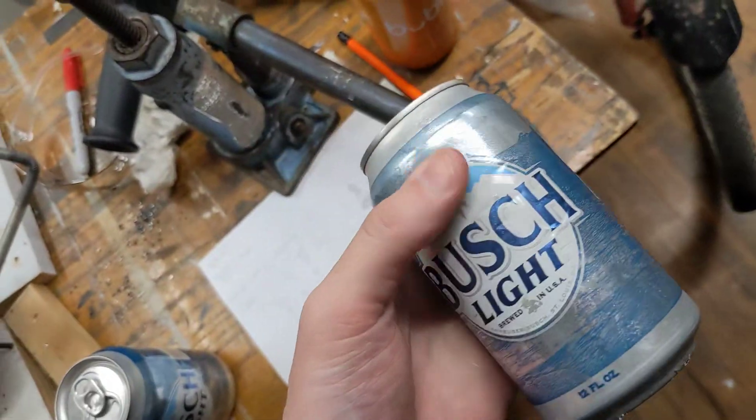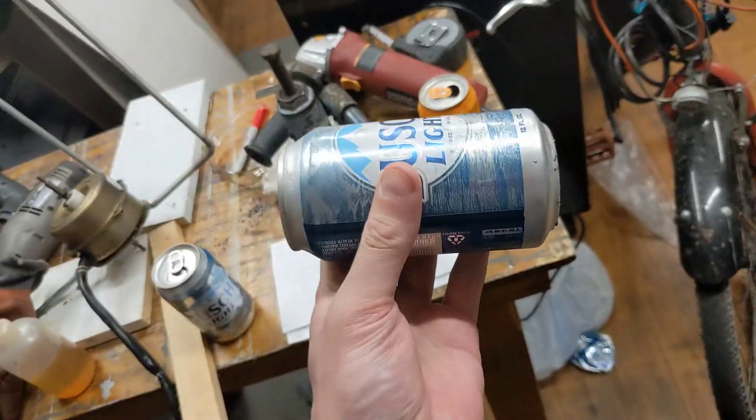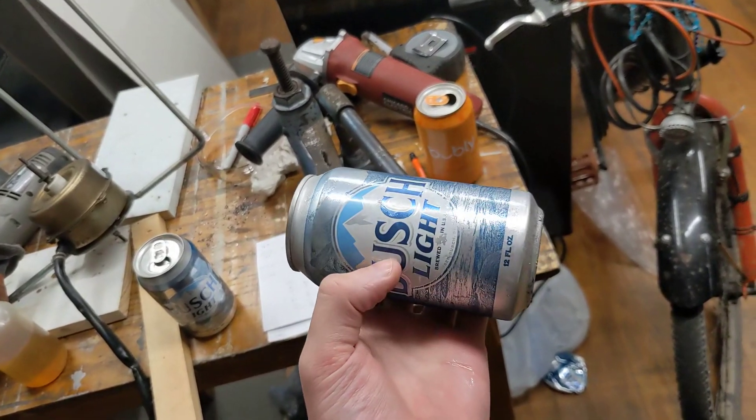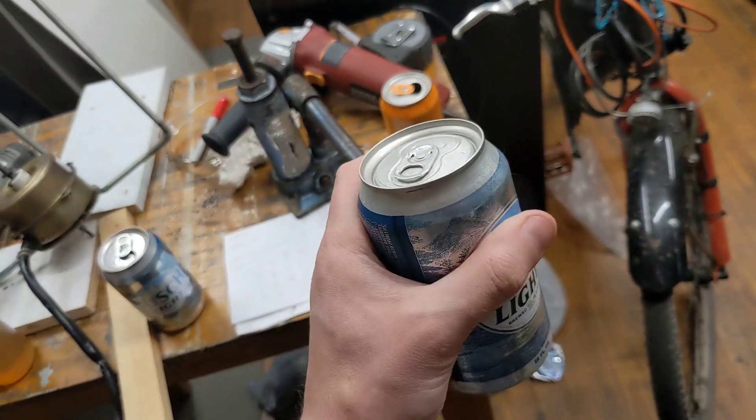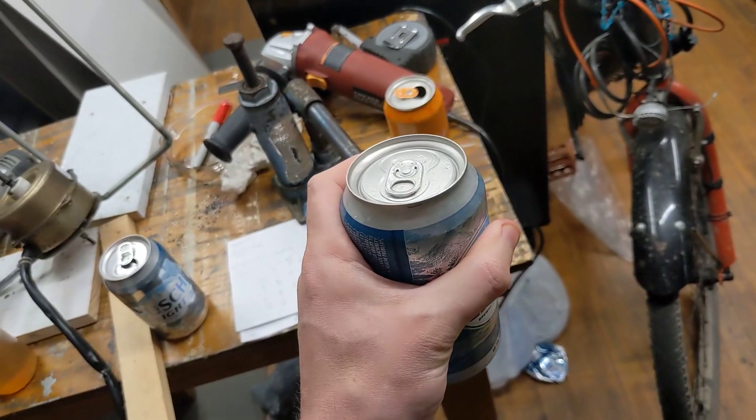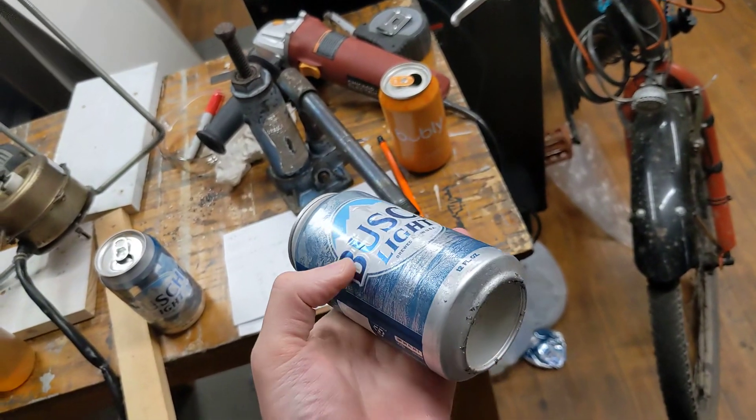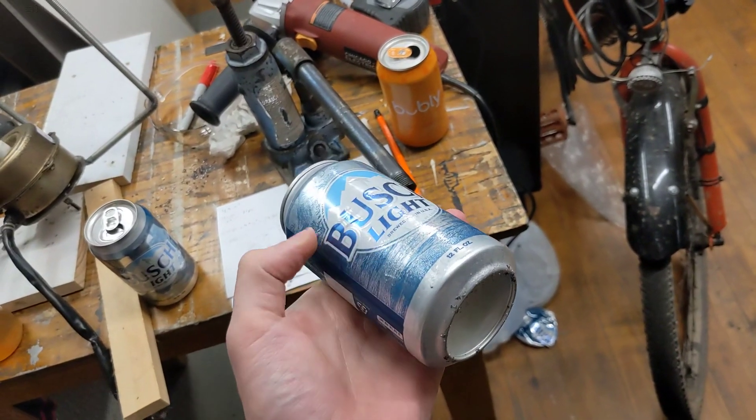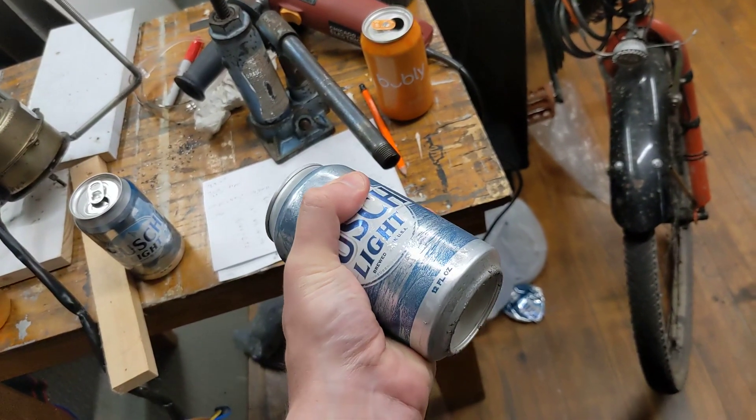What we have to realize, though, about that submersible is it was also a pressure vessel, but it worked in the opposite direction. So instead of the higher pressure being inside the vessel, the higher pressure was on the outside of the vessel. So the water pressure was pushing inwards.